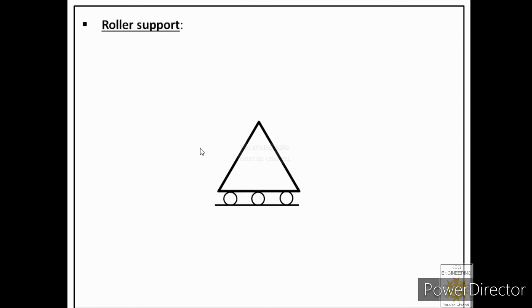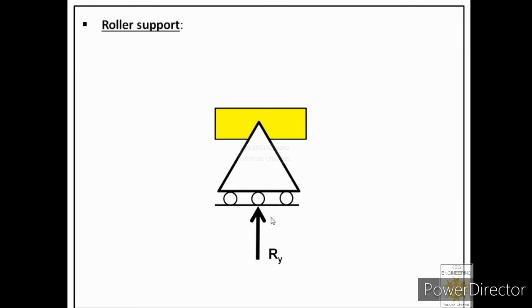A roller support is used to support bodies — normally used in bridges. It has rollers at the bottom and supports the body at the top. A roller support provides only one body constraint, which is normal to its surface. It restricts motion normal to the surface, but the body can still move along the surface or rotate.